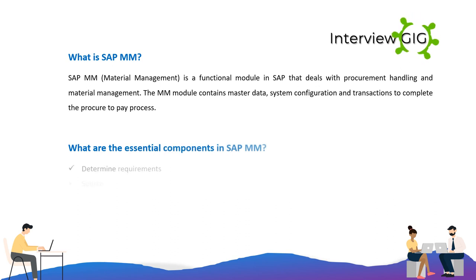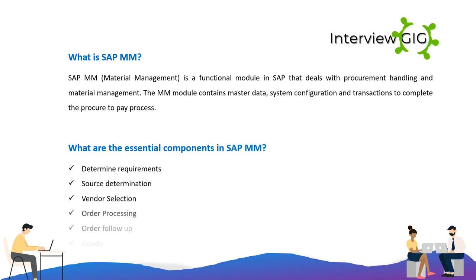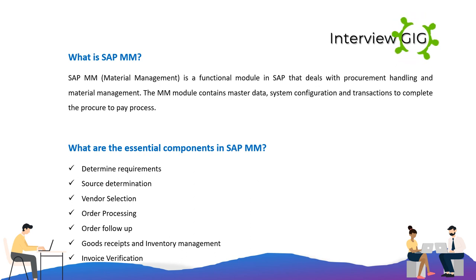What are the essential components in SAP MM? The essential components are: determine requirements, source determination, vendor selection, order processing, order follow-up, goods receipts and inventory management, and invoice verification.